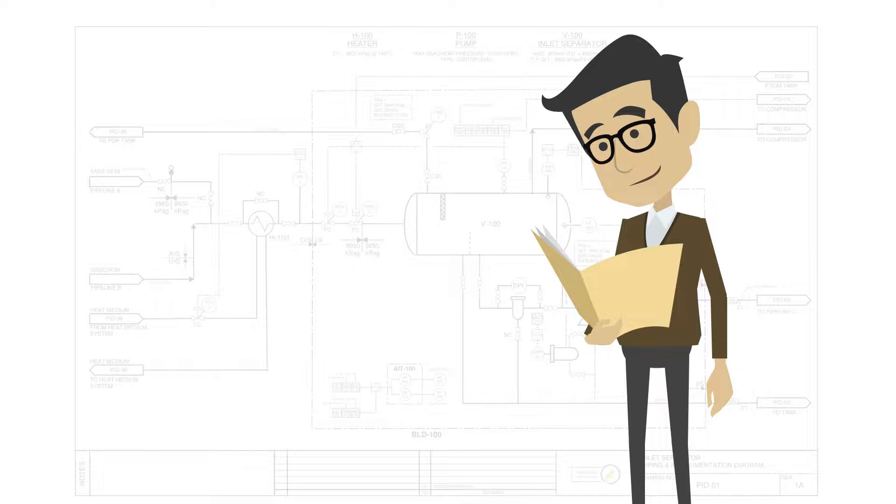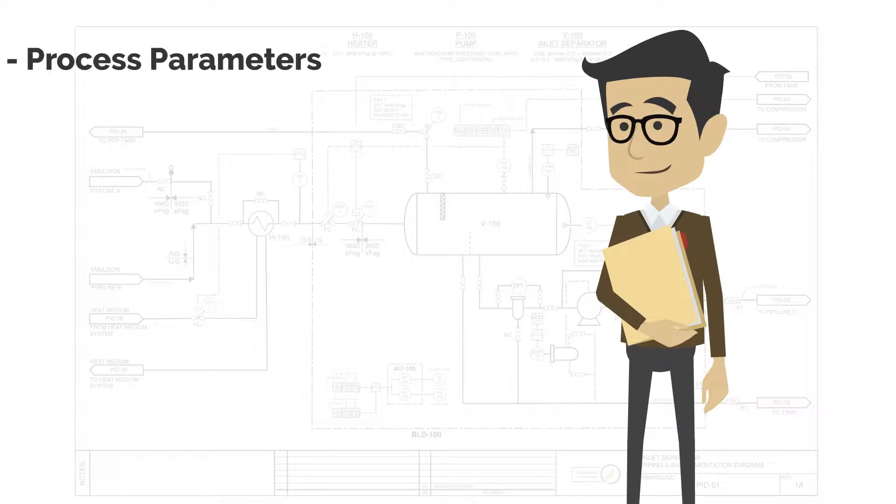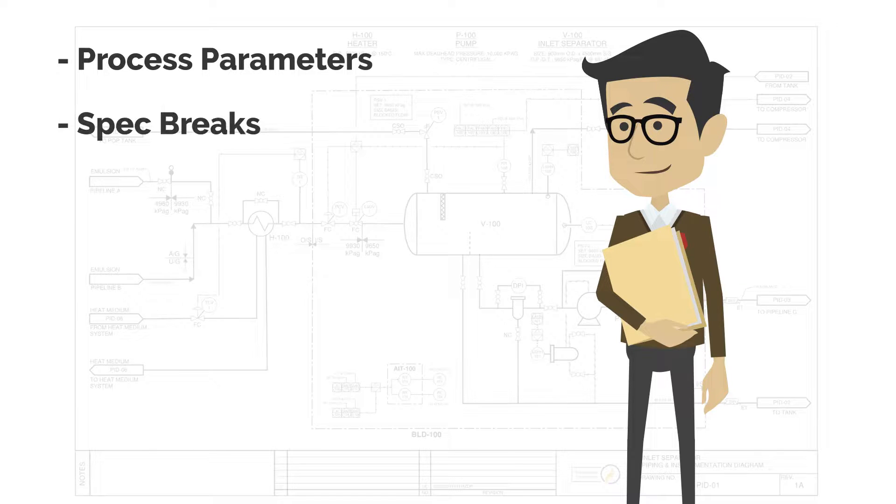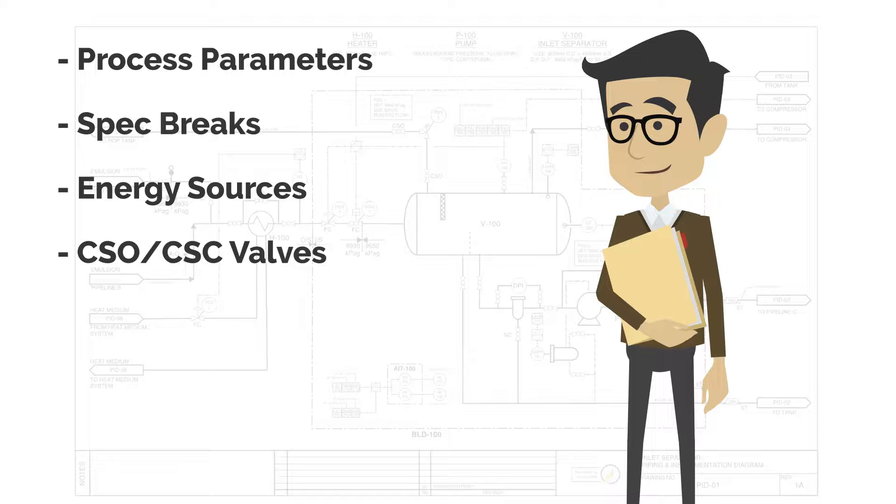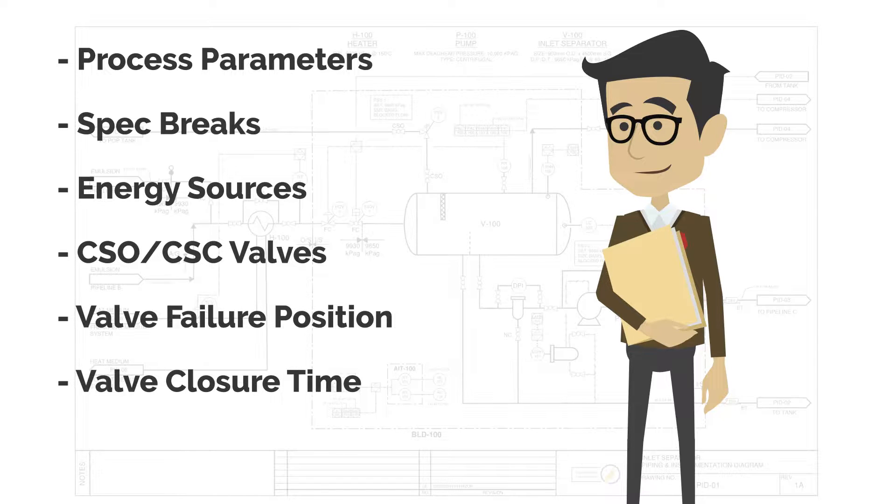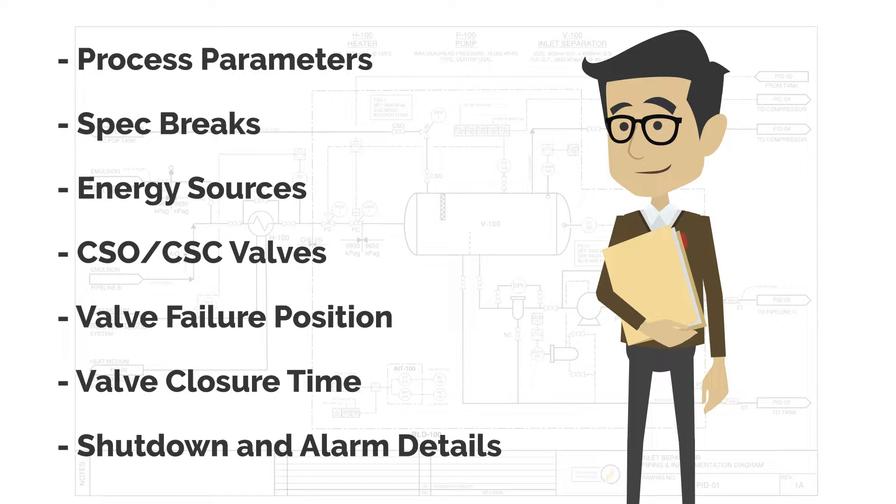Key details from today's lesson include understanding the process parameters associated with unknown connections, identifying pressure and temperature spec breaks, identifying energy sources in the system that can cause hazardous scenarios, noting any valves with administrative controls, valve failure position and closure time, and details on shutdowns and alarms for critical safeguards. As facilitators, it is important that we consider all modes of failure and ensure that the process is safe and operable.